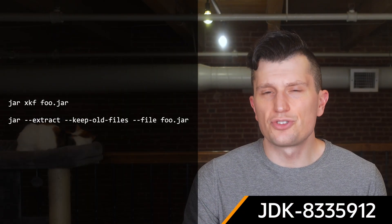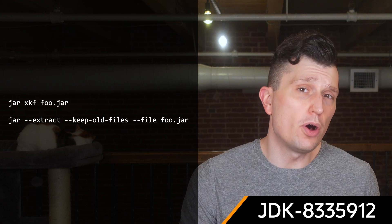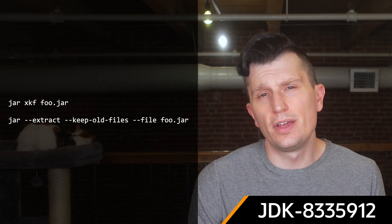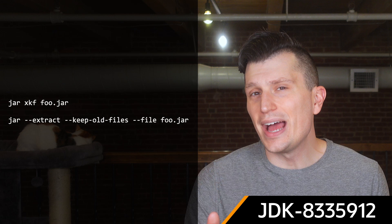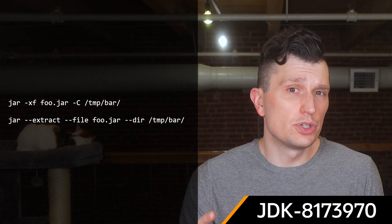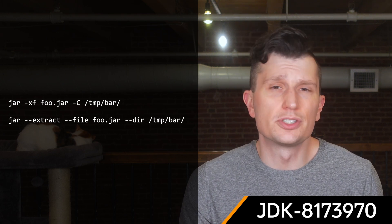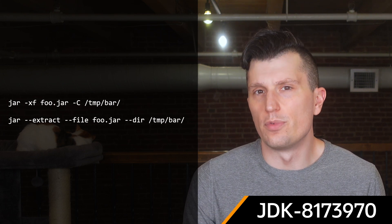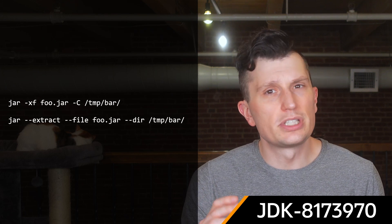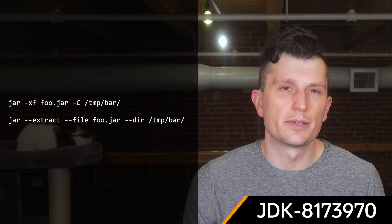The JAR tool's extract operation has been enhanced to allow the Keep Old Files, or the -k option, to be used to prevent overwriting files. The JAR tool's extract operation has also been enhanced to allow the -d or -C options to specify the directory where the archive will be extracted. A new JDK-specific monitoring and management interface, JDK Management Virtual Thread Scheduler MX Bean, has been added to allow JMX-based tooling to monitor and manage the virtual thread scheduler.